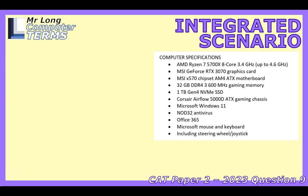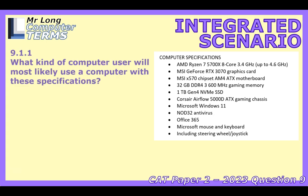Question 9.1.1 asks: what kind of user is this setup really for? The answer is a power or super user — a gamer. Looking at those specs, it makes total sense. The Ryzen 7 CPU provides loads of processing power for demanding games and won't bottleneck easily, keeping things smooth even when there's a lot happening on screen.